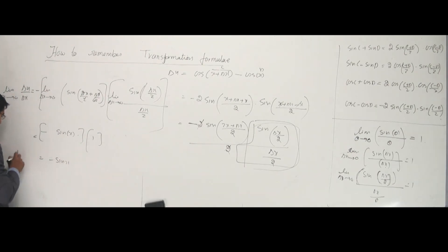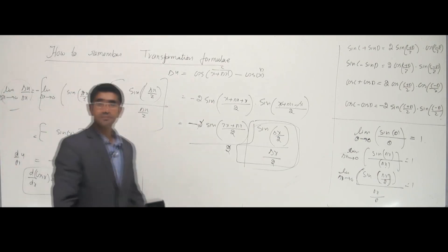So I can write dy by dx. Since y was cos x, d by dx of cos x is equal to minus sine x. That's the formula we need. Very simple.